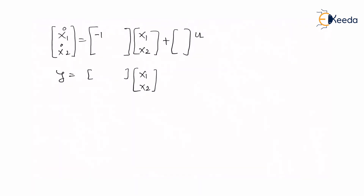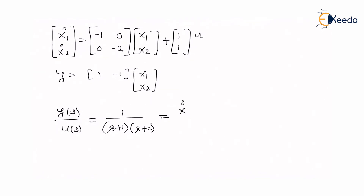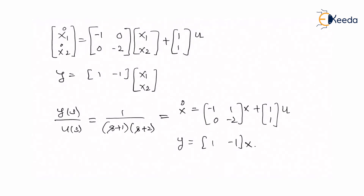Combining all: ẋ1 = −1·x1 + 0·x2 + 1·u; ẋ2 = 0·x1 − 2·x2 + 1·u; y = 1·x1 − 1·x2. This completes the entire conversion. In summary, y(s)/u(s) = 1/[(s+1)(s+2)] is converted into ẋ = [−1, 0; 0, −2]x + [1; 1]u and y = [1, −1]x. Thank you so much for watching the video.